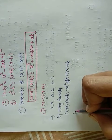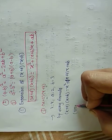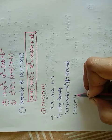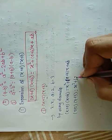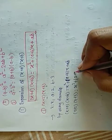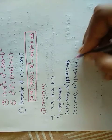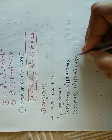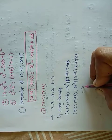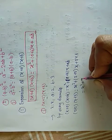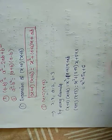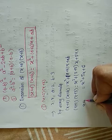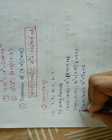Now put the values in the formula. (x+2)(x+3) = x² + (2+3)x + 2×3 = x² + 5x + 6. This is the answer for (x+2)(x+3).